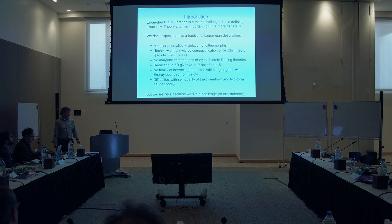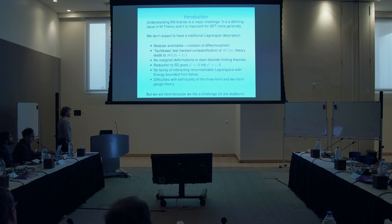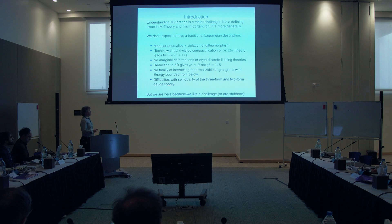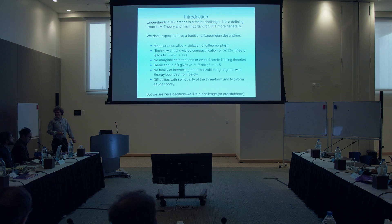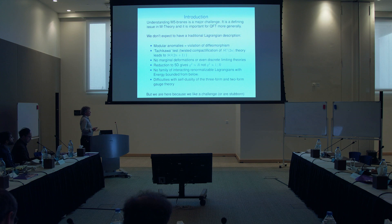The last objection is the difficulty with defining self-duality of a three-form in six dimensions, associated to some interesting geometrical structure - a non-abelian gerbe or something - giving meaning to what a two-form gauge field might mean. That's the challenge we're all interested in here. We're here because we're being stubborn and not satisfied with our understanding.